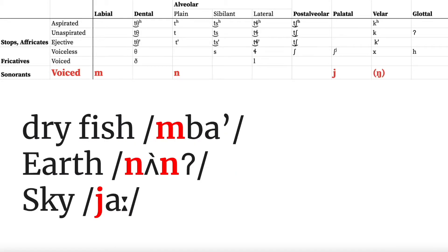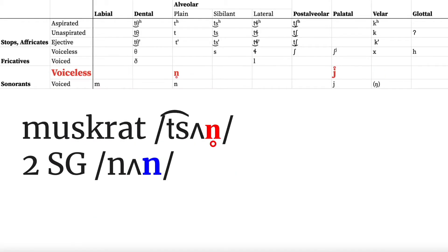Upper Tanana features four voiced sonorants, the palatal and velar having debatably phonemic partial devoicing in syllable codas.